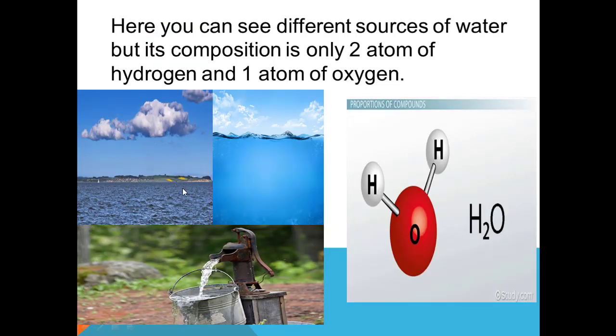You can see different sources like tap water, seas, and river water, but the chemical formula is always H2O. Whenever two hydrogen atoms combine with one oxygen atom, water formation takes place. This is what the law of constant composition tells us — the composition is always the same regardless of the source, whether obtained from different sources or prepared in a laboratory.